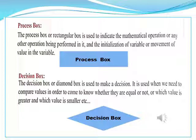The decision box: The decision box or diamond box is used to make a decision. It is used when we need to compare values in order to know whether they are equal or not, and which value is greater and which value is smaller. For example, in making a cup of tea, when the water is boiling, we decide whether the water has boiled or not — yes or no. If yes, we proceed with further steps; if no, we wait. Similarly, the decision box is used in any flowchart to compare mathematical values.